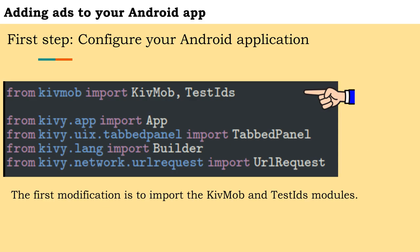The first modification is to import the Kivmob and TestIDs modules. The quickest way to enable testing is to use Google-provided demo ad units. The TestIDs module provides demo ad unit IDs just for testing your application.